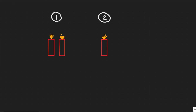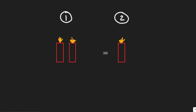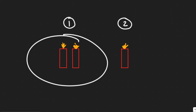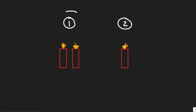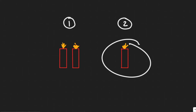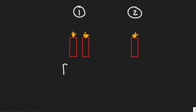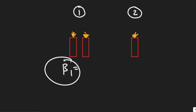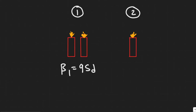In this problem we're told: if two firecrackers produce a sound level of 95 decibels when fired simultaneously at a certain place, what will be the sound level if only one is exploded? So you always want to draw what's going on. We have two firecrackers in one scenario and one in the other. They tell us that the sound level when two are fired is going to be beta one — that's 95 decibels.